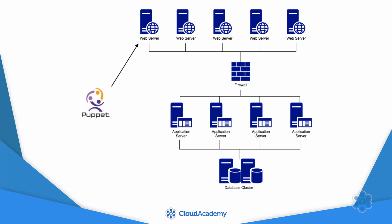Then if something happens to that web server later on, such as the Apache config file changing, then Puppet will get it back to its desired configuration without any human intervention required. Here are some of the ways that Puppet can make your life easier.